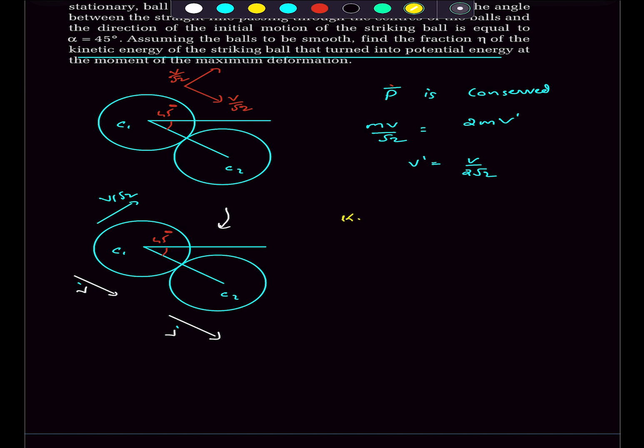Okay, so now let's write the final kinetic energy. The final kinetic energy of the system is going to be half M times the speed of this ball, which is V dash square plus V by root 2 whole squared, and the kinetic energy of this ball is simply half M V dash square.